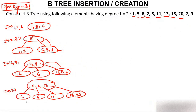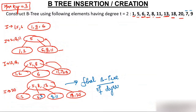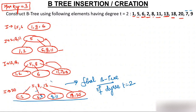Now insert 7 — it comes after 6 and before 8, so it goes into that middle child node with 6 and 7. Then insert 9 — it comes after 8 and before 11, so 9 goes into the node between 8 and 11. This is the final B-tree with degree t=2. All properties are satisfied: all leaf nodes are at the same level, no node has more than 3 keys, all keys are stored in increasing order, and for n keys there are n+1 children (3 keys gives 4 children in the root). Thank you so much.